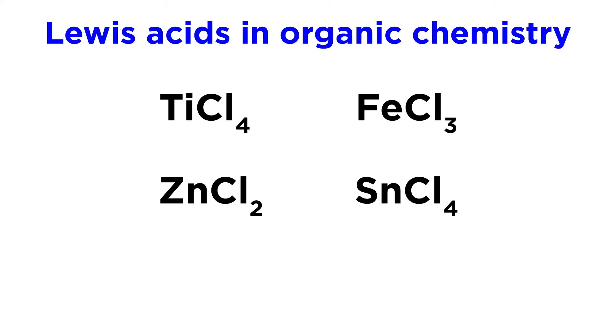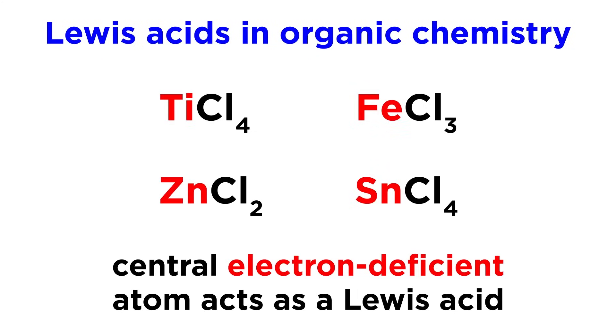Transition metals also frequently form Lewis acids. Compounds like TiCl4, FeCl3, ZnCl2, and SnCl4 are all Lewis acids due to having a central electron-deficient atom which is susceptible to attack from a Lewis base.